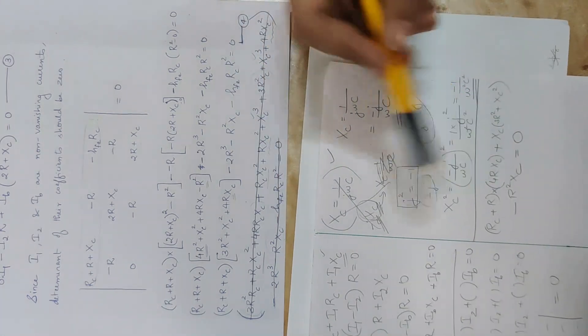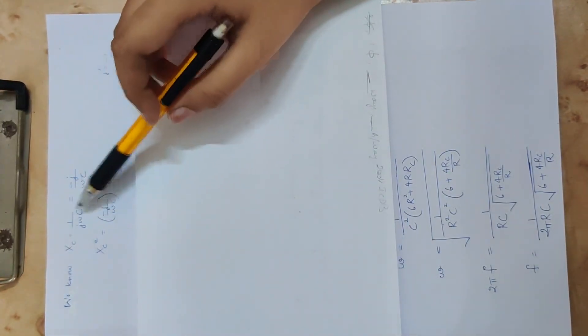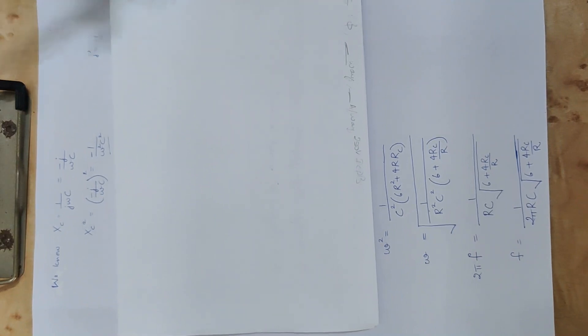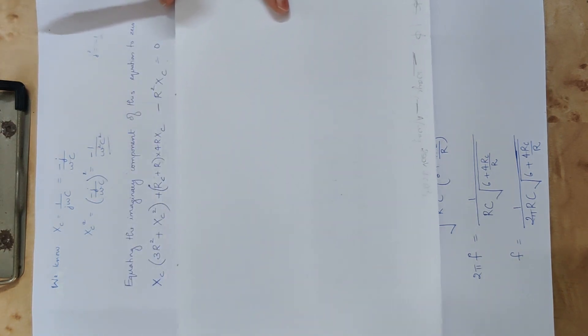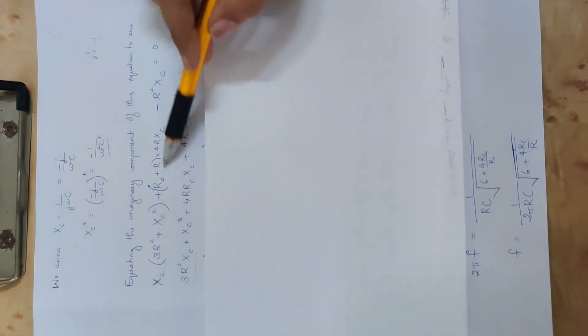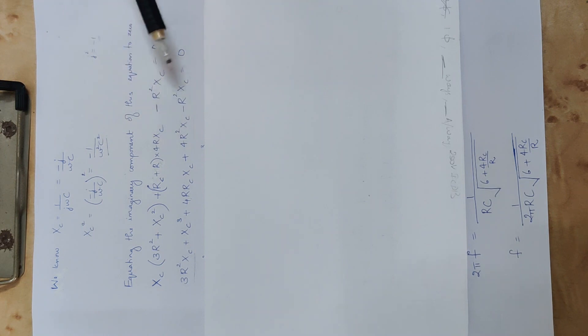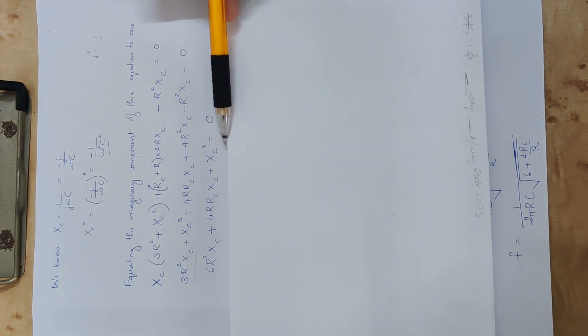Now you can do this and write the frequency of oscillation derivative. XC equals 1 by jωc, which is minus j by ωc. XC squared is minus 1 by ω²c². Now we write the imaginary components equal to zero. Expanding: 3r²xc plus 4r²xc minus r²xc — that is 3 plus 4 minus 1 = 6. So 6r²xc. Then 4r²xc plus xc³ equals zero.